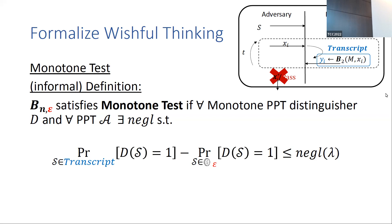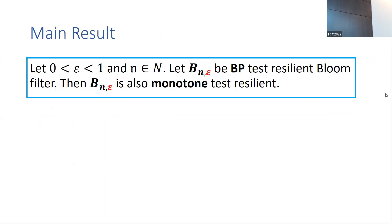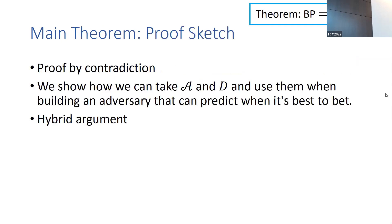Notice the similarity with the cryptographic pseudorandom notion — in both cases we consider a distinguisher, but here we only consider monotone distinguishers. Also, we look at the difference between probabilities without absolute value, unlike in the cryptographic pseudorandom notion. This is because the transcript can contain many zeros — for example, elements that are always true negatives. We are only interested in cases where an adversary increases false positive rates or creates clusters. This test formalizes our wishful thinking, and we showed that if a bloom filter satisfies the BP notion, it also satisfies the Monotone Test — meaning BP implies our wishful thinking.